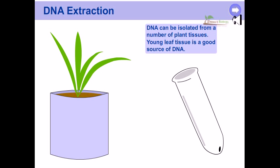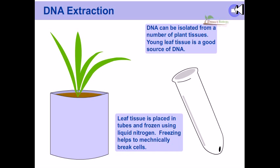DNA can be isolated from a number of plant tissues. Young leaf tissue is a good source of DNA because young cells are gradually dividing and have fresh DNA. Leaf tissue is placed in a tube and frozen using liquid nitrogen. Freezing helps mechanically break the cells.